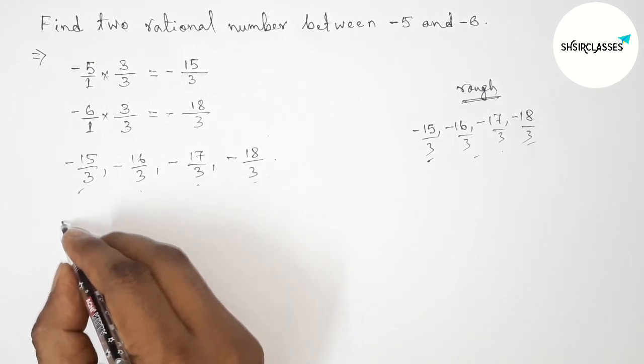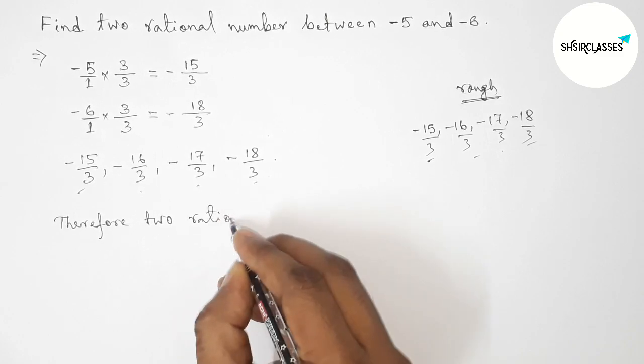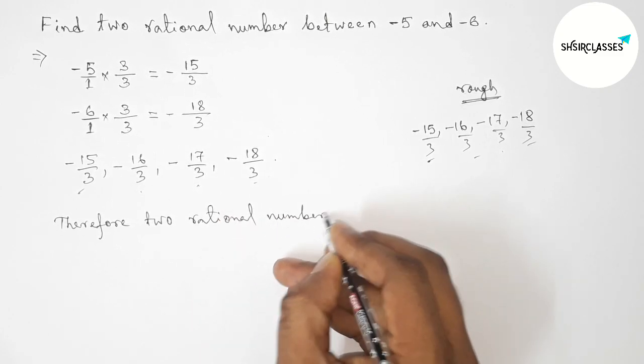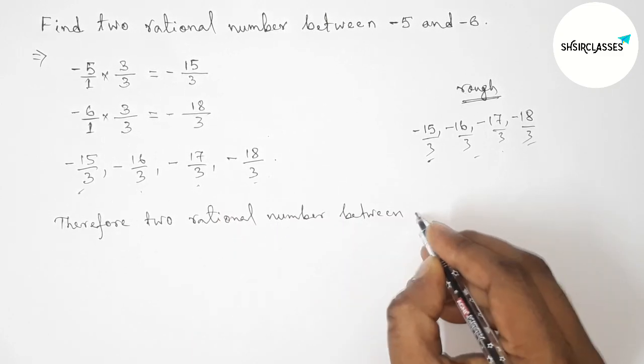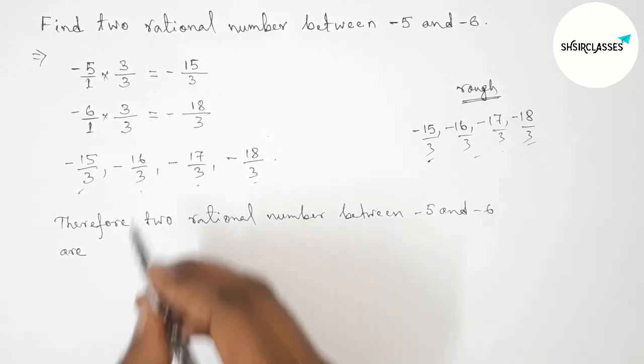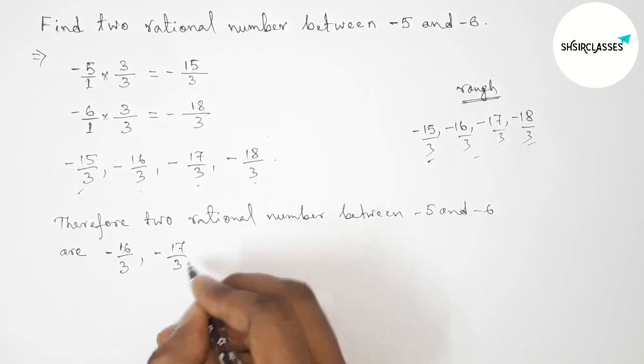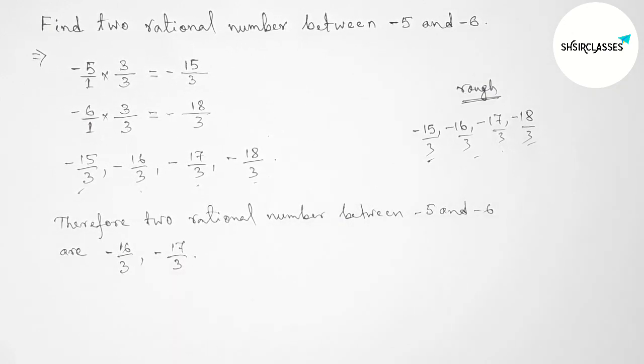Therefore, the two required rational numbers between -5 and -6 are -16/3 and -17/3. That's all, thanks for watching.